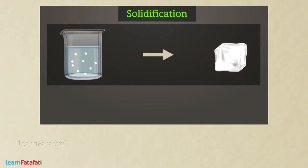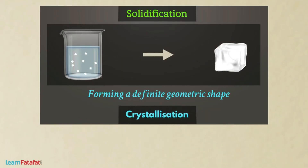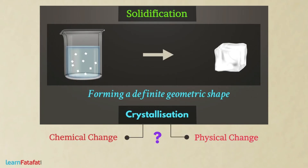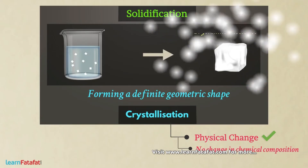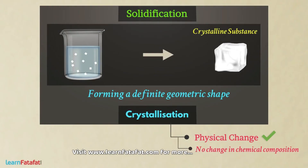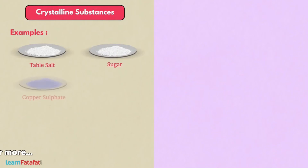The solidification of matter forming a definite geometric shape is called crystallization. Can you tell whether crystallization is a chemical change or a physical change? Here, there is no change in chemical composition. Therefore, this change is a physical change. The substances formed by crystallization are called crystalline substances. Examples are table salt, sugar, copper sulphate, diamond, etc.